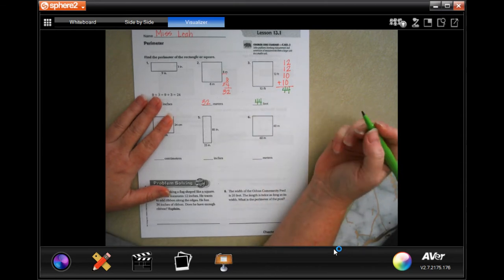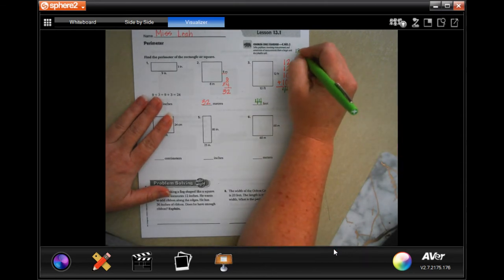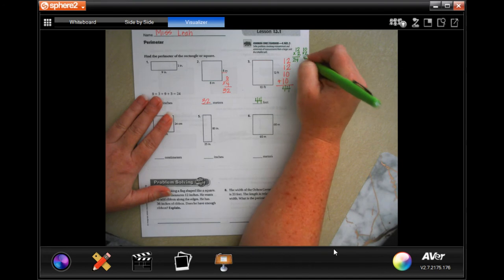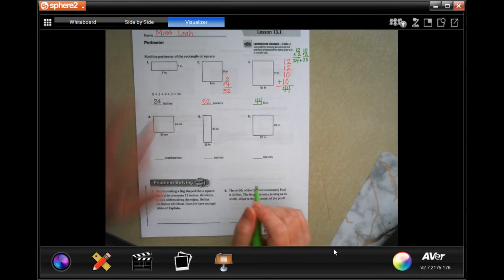Now if it is easier for you to say 12 times 2 and 10 times 2 and then add those two together—because we would have 24 and 20 and then do 24 plus 20 is 44—you can absolutely do that too. That's another option.